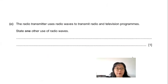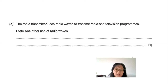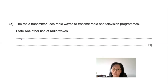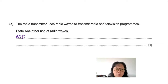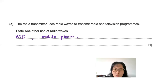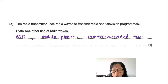Part C: The transmitter uses radio waves to transmit radio and television programs. State one other use of radio waves. Radio waves can be used in mobile phones, Wi-Fi internet, or remote-controlled toys. You just need to state one other function.